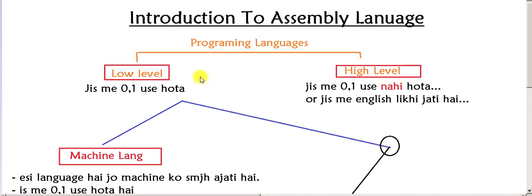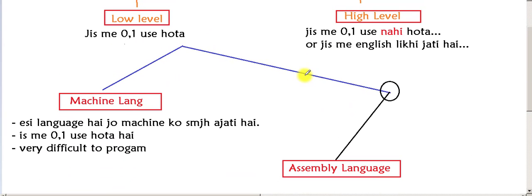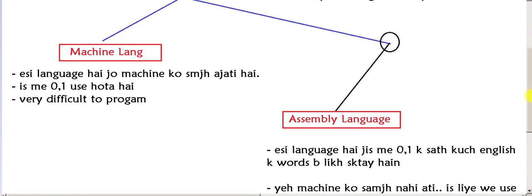मैं आपको थोड़ा सा background बता देता हूं। Basically दो तरहां की programming languages होती हैं: एक होती है low level language और एक होती है high level language। Low level language वो होती है जिसमें 0-1 use होता है। High level language वो होती है जिसमें 0-1 use नहीं होता, या आप यह भी कह सकते हैं कि जिसमें English use होती है। Low level languages दो तरहां की होती हैं: machine language और assembly language।